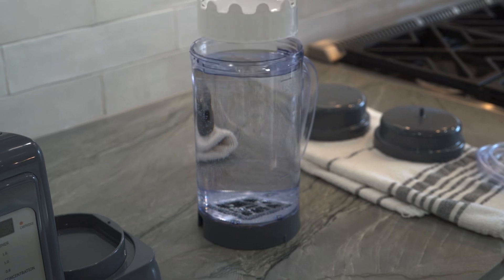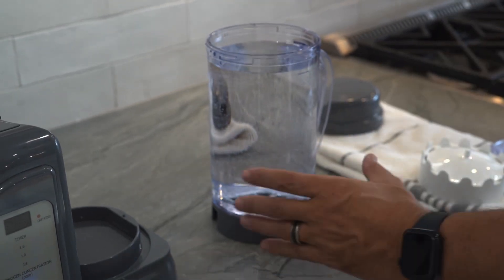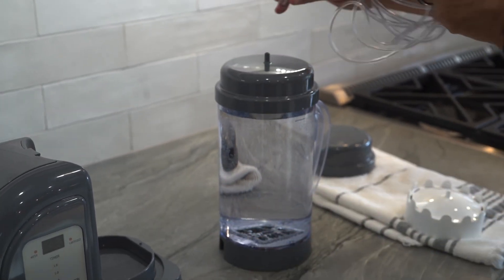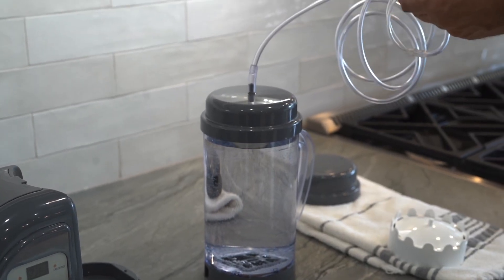For inhalation, you must first remove the floating hydrogen keeper from the pitcher. Then, simply replace the pouring lid with the inhalation lid and cannula.